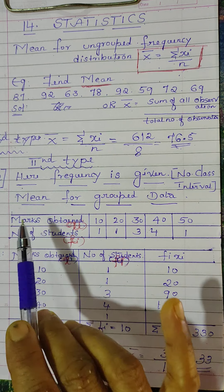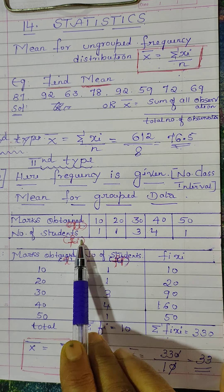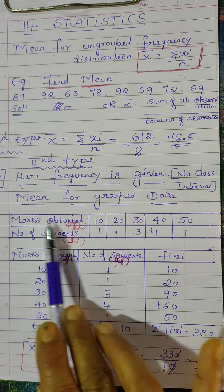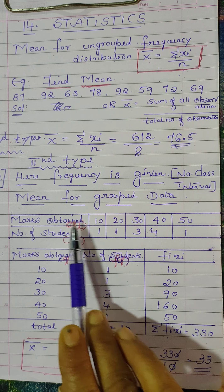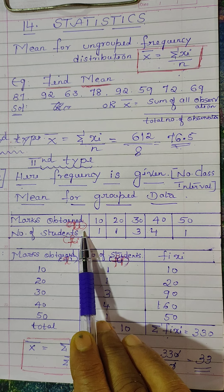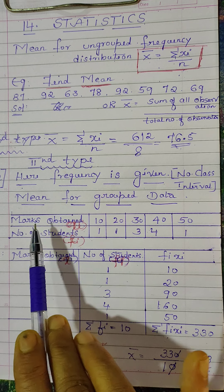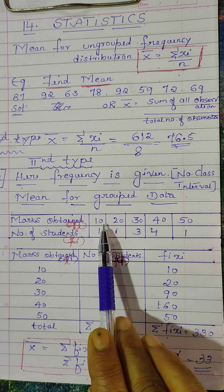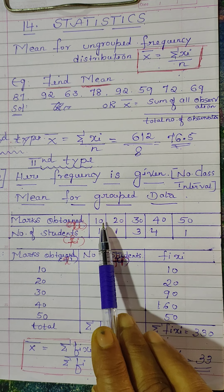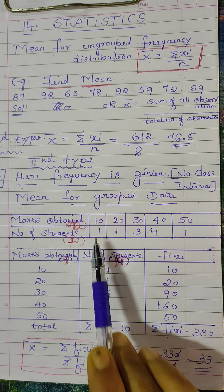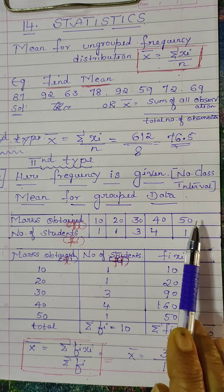See the question now — mean for grouped data. Grouped data mei dho column aya: one is marks obtained, another is number of students. Marks obtained means that is the xᵢ values; number of students ka matlab hai fᵢ. Marks obtained range from 10 to 50. Number of students: 10 marks got 1 student, 20 got 1 student, 33 got some, 44 got some, 50 got 1 student.